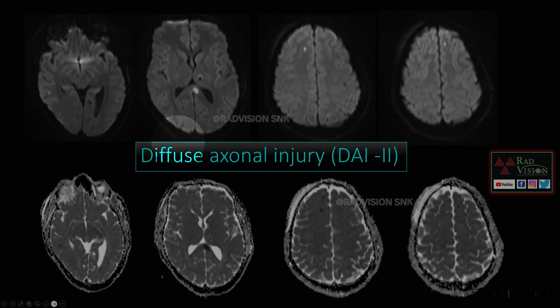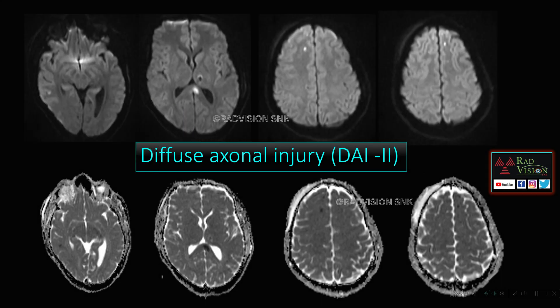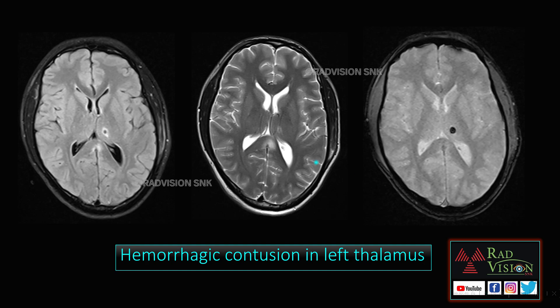In this case, there are hyperintensities on DWI noted in the splenium of corpus callosum, pericallosal area, gray-white matter junction of the right temporal lobe, and bilateral frontal lobes, with low ADC values. This is a classical case of diffuse axonal injury (DAI) Grade 2, because it involves both the corpus callosum and the lobes. There was also a hypointense lesion in the left thalamus showing blooming on GRE with perilesional edema — this was a hemorrhagic contusion in the left thalamus.